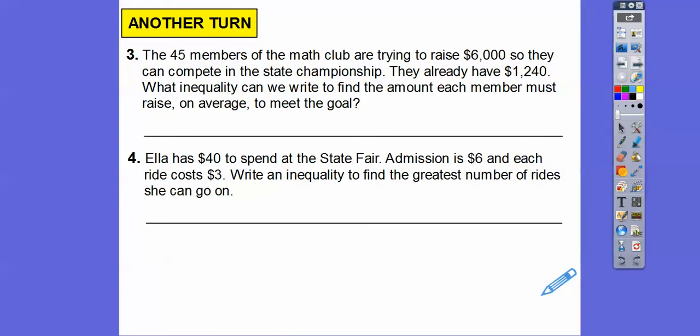So here we have the 45 members of a math club are trying to raise $6,000 so they can compete in the state competition. They already have $1,240. What inequality can we write to define the amount that each member must raise on average to meet that goal? So the goal is $6,000 and they can get more than that. So it's going to be greater than or equal to $6,000. And they already have this much in there. So if it's going to be 45 members and each person is going to raise the same, it's going to be this number plus 45 times our variable. I don't know if I did X or G for whatever that has to be greater than or equal to that to reach our goal. I did A.